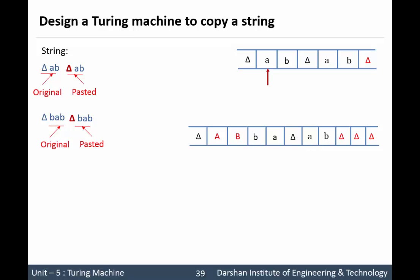Again move to the left direction. Replace this small 'b' by capital 'B'. Move to the right direction; whenever we encounter the blank symbol, replace this blank symbol by small 'b'. Again move to the left direction. Read this 'a' and convert this 'a' into capital 'A'. Again move to the right direction, process 'a b b', and whenever we encounter the blank symbol replace it by small 'a'. Keep moving to the left direction. When we encounter the capital symbol, scan the string to the right direction. But in the right direction we directly have delta, meaning it is the separator between the original string and the pasted string. That means no more symbols remain in the original string.